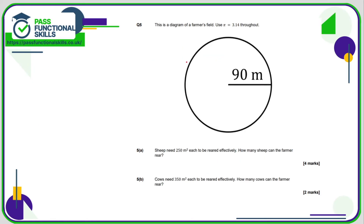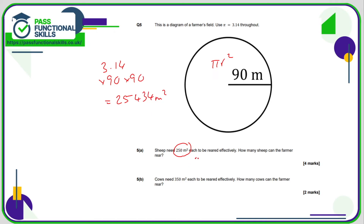Question 5: first we work out the area of the farmer's field. The area is pi r squared — 3.14 times 90 times 90 — so the area is 25,434 square metres. If one sheep needs 250 square metres, we divide 25,434 by 250, which comes to 101.736. Since you can't have a fraction of a sheep, it rounds down to 101 sheep.